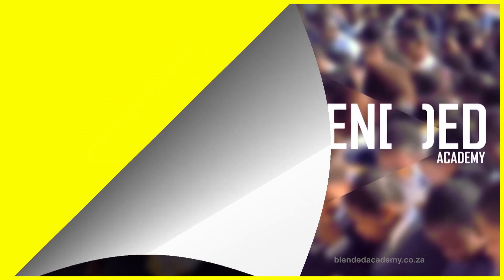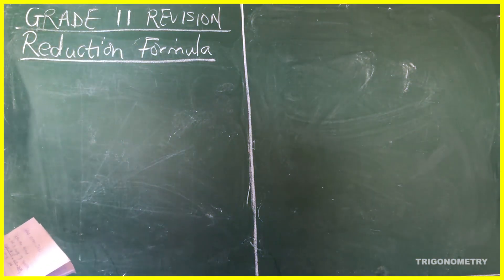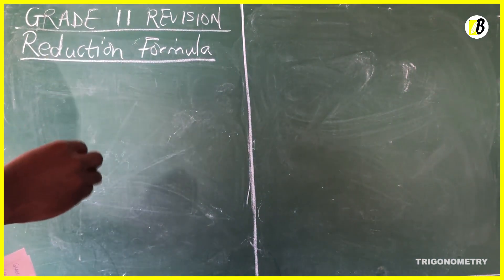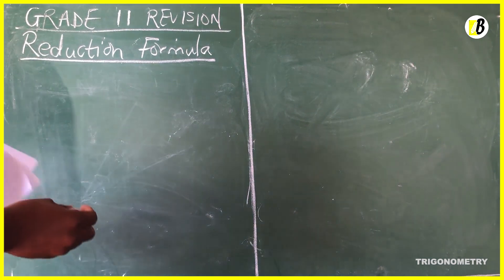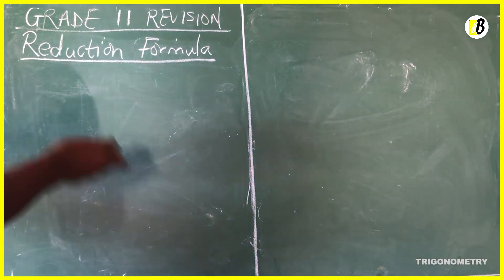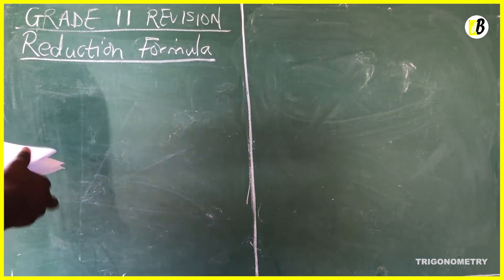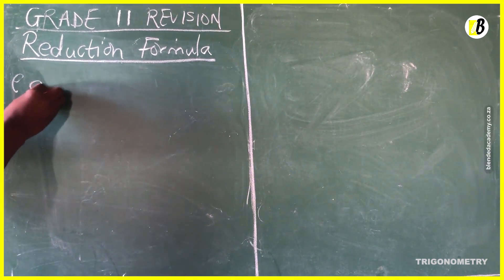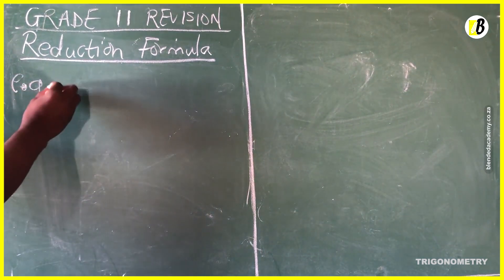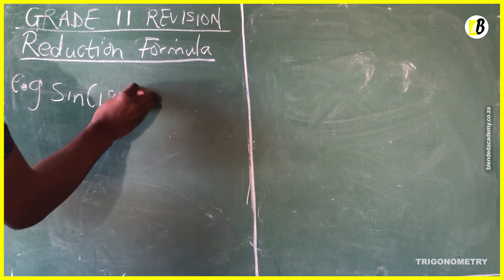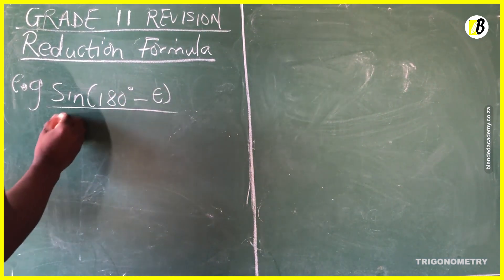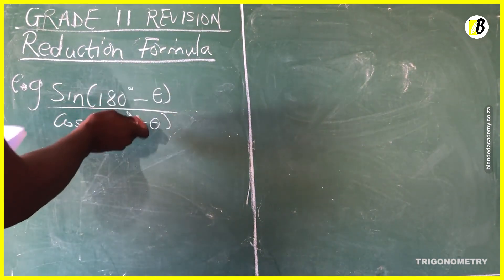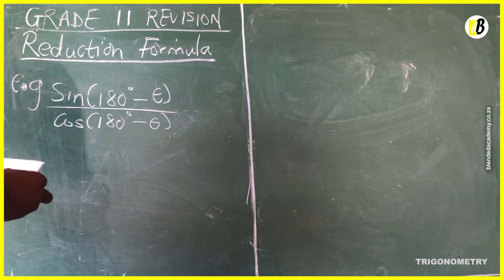Welcome to the lesson guys. Today we're gonna be working on trigonometry. We're gonna start off with the reduction formula — please make notes as we move along because I'm gonna need to make some more space for different examples and questions. Starting off with the reduction formula: this formula is used to simplify trigonometric expressions. For example, let's simplify this expression: sine 180 degrees minus theta, divided by cos 180 degrees minus theta.